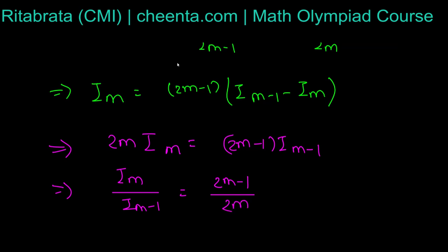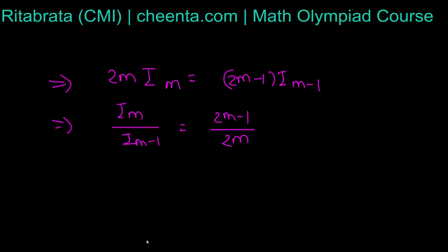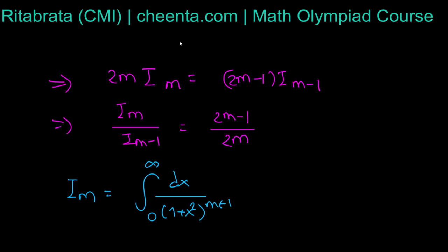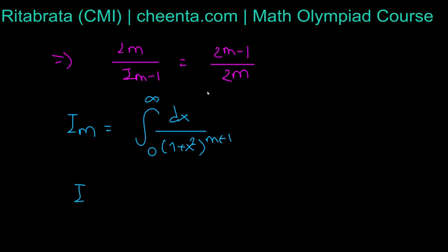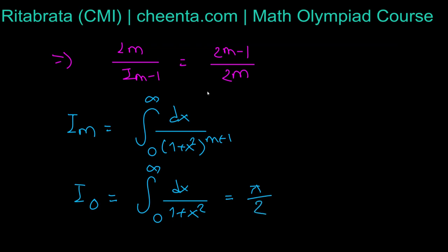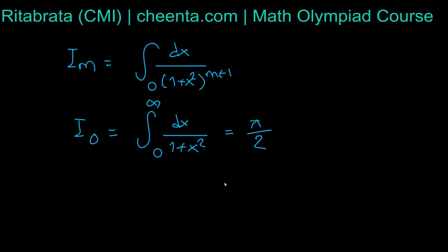Now we can see that computing I_M/I_(M-1) · I_(M-1)/I_(M-2) and so on gives a telescoping product where many terms cancel. We also need the base case. I_0 is the integral from 0 to infinity of dx/(1+x²), which equals arctan(x) evaluated from 0 to infinity, giving π/2. So I_0 = π/2.